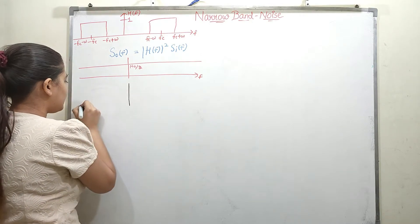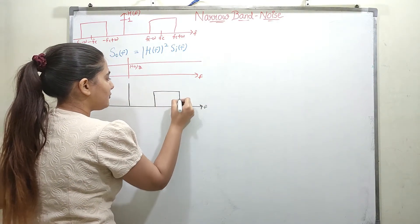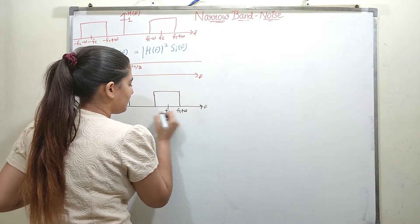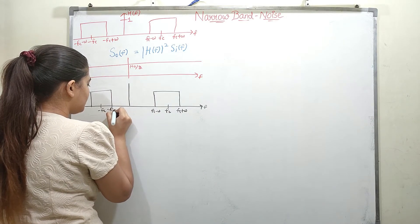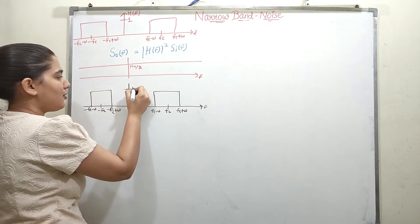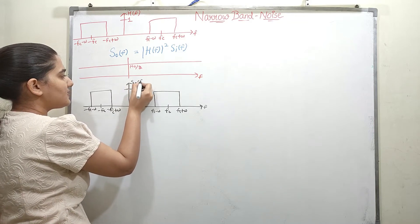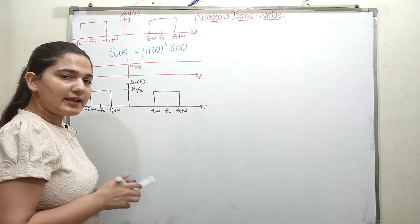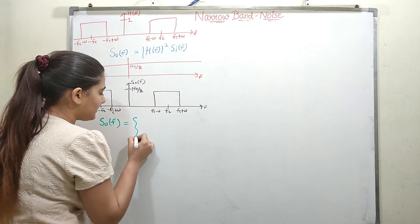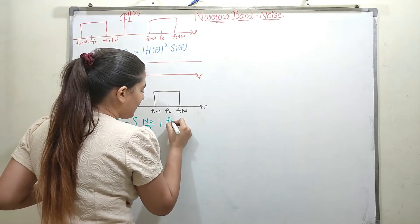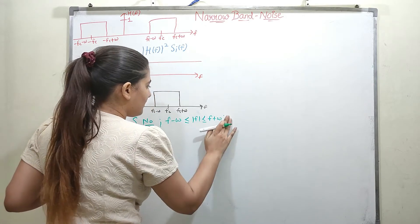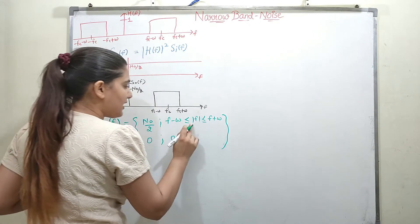I will be plotting S_output(F) again. S_output(F) has frequency components only centered around Fc and minus Fc. Here it is Fc plus W, Fc minus W, minus Fc plus W, minus Fc minus W. The amplitude, because 1 is multiplied with N₀/2, gives N₀/2 here. The output power spectral density is equal to N₀/2 for |F − Fc| ≤ W or |F + Fc| ≤ W, and 0 for all other values of frequency.